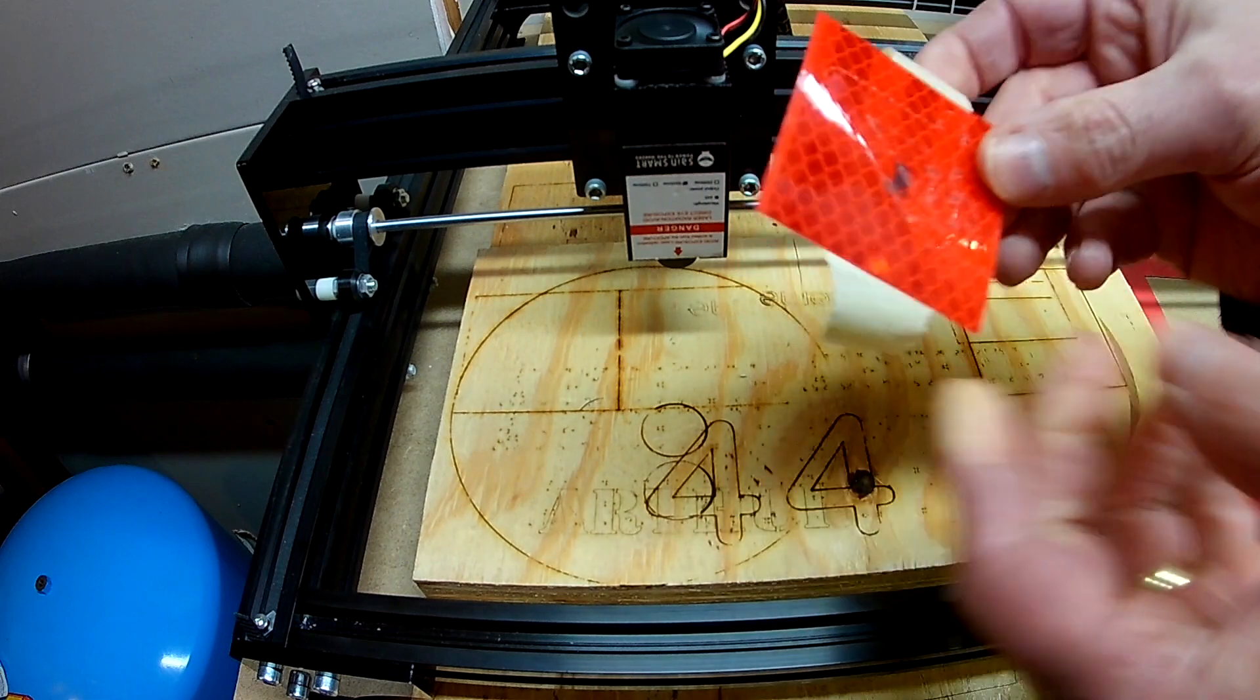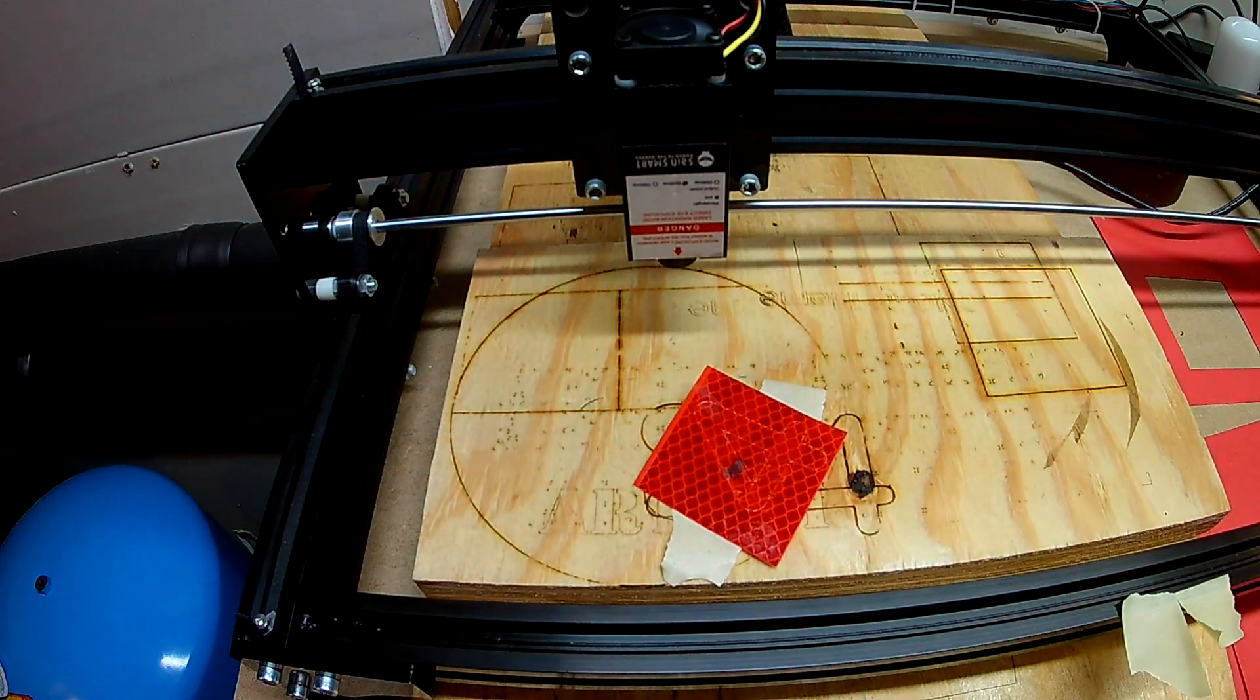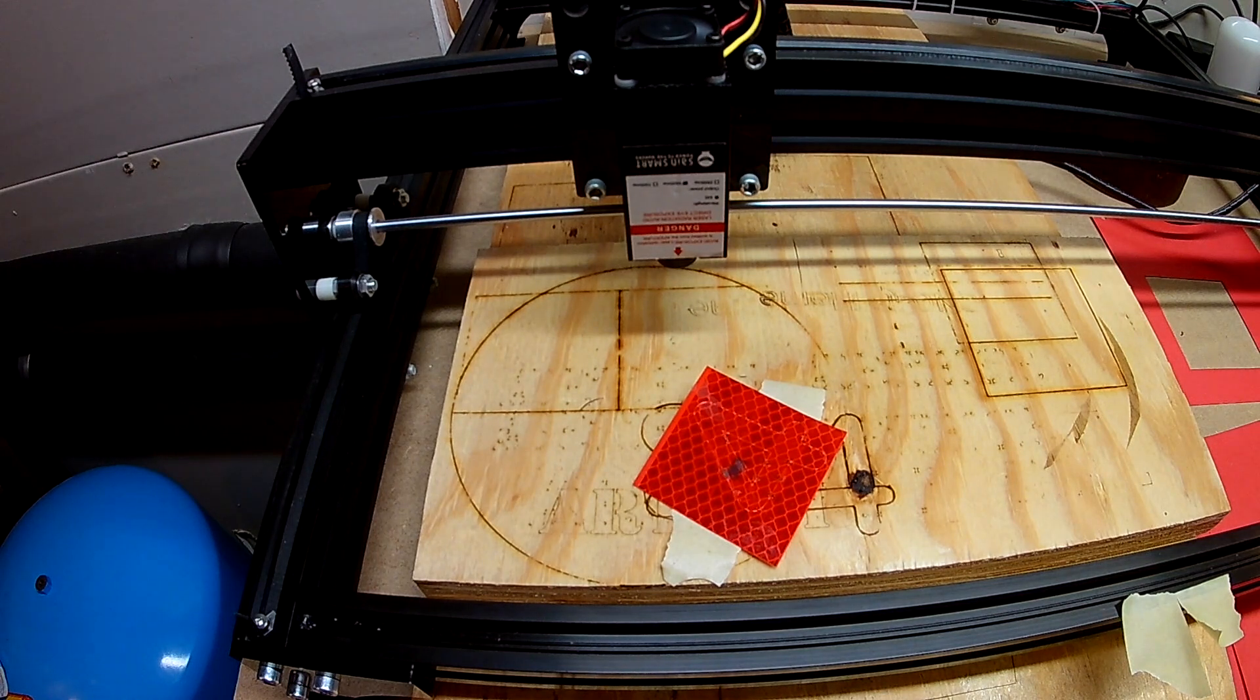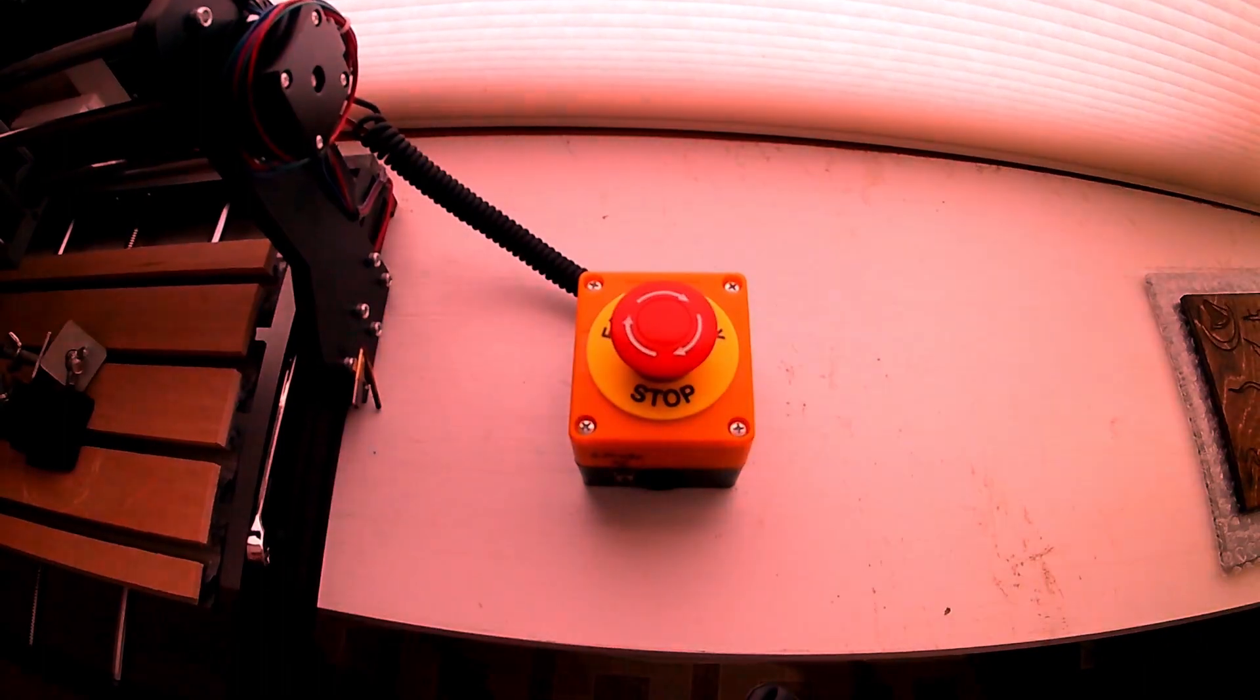There we have it. So now we can cut letters and numbers and whatnot, shapes, images, out of 3M reflective tape. Hi, I'm AT from CNC at home. If you like our content, help support our channel by clicking on subscribe and liking our videos. Thank you for watching this video. Have fun with your CNC at home projects.